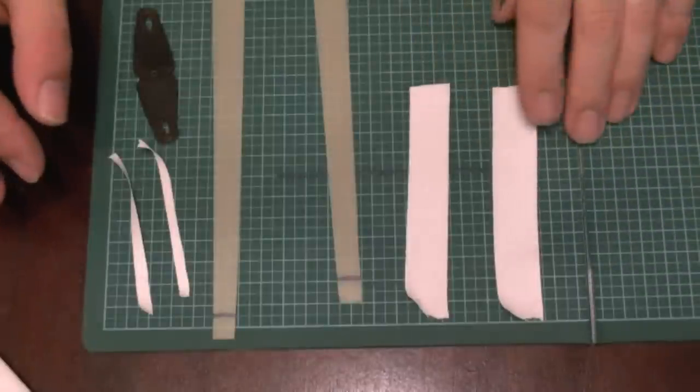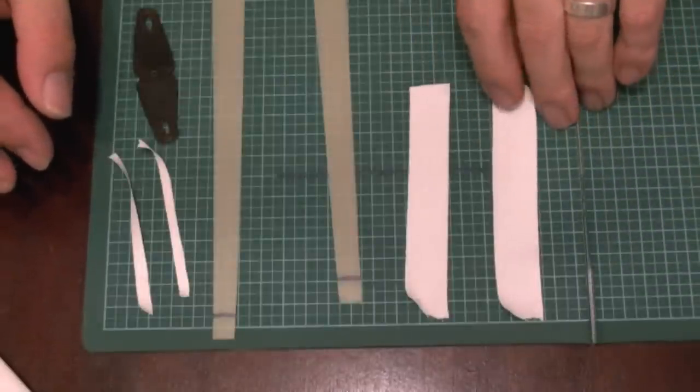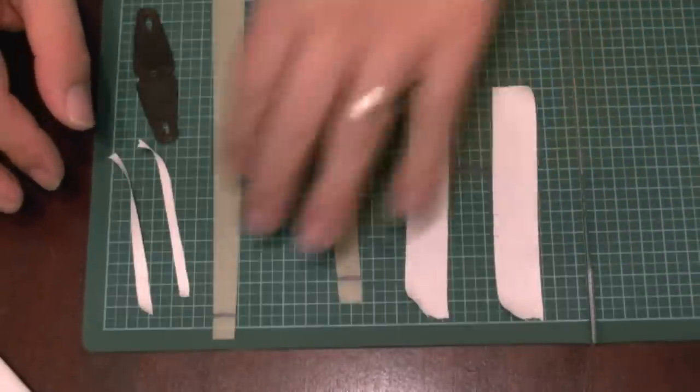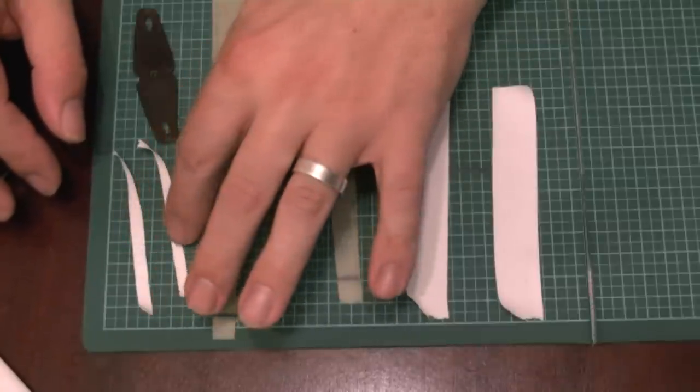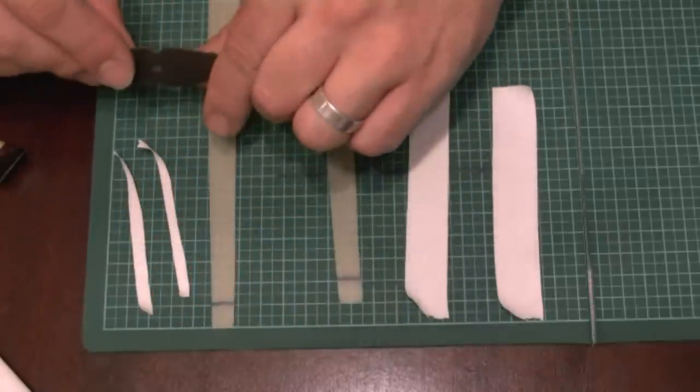I pre-cut my strips. This strip of tape is to attach the bands to the fork. These two strips of tape are to attach the bands to the pouch.